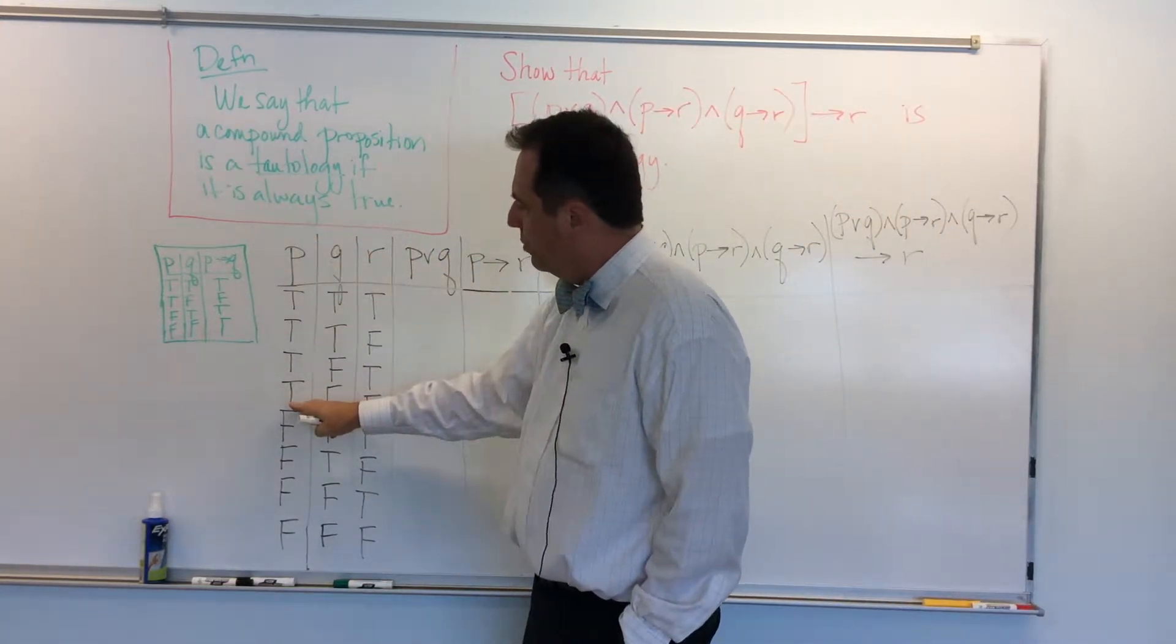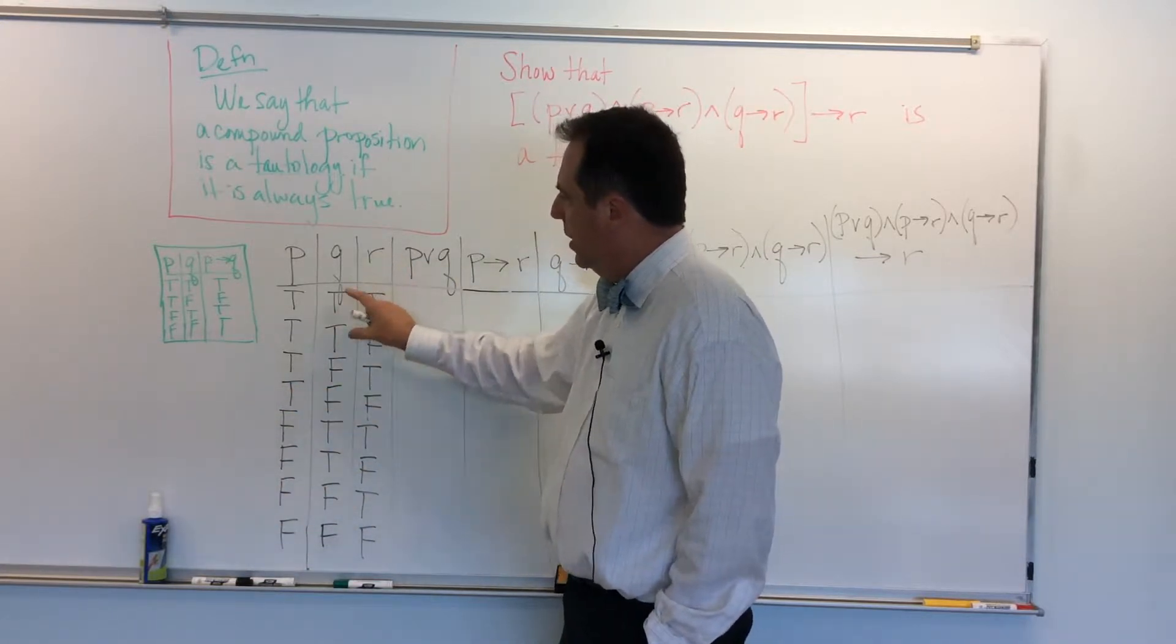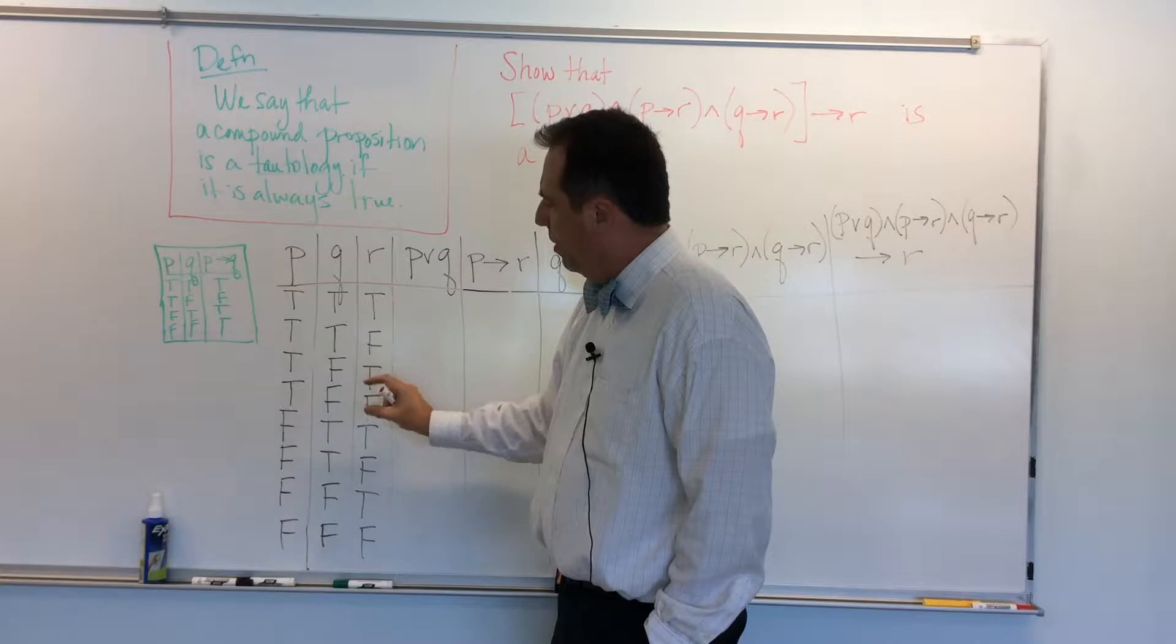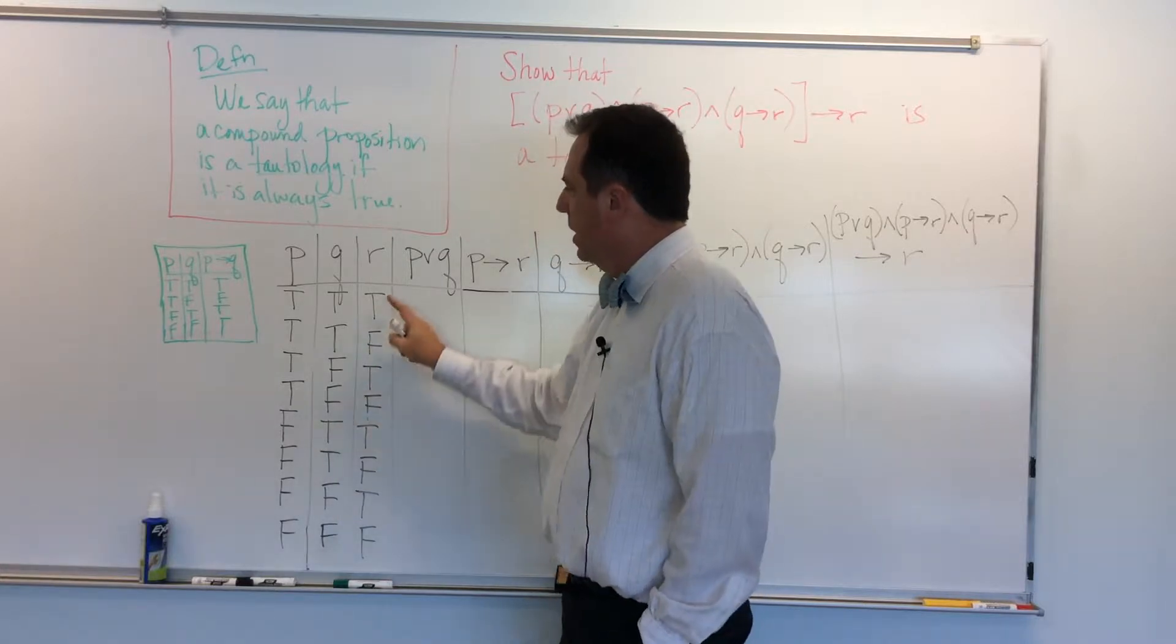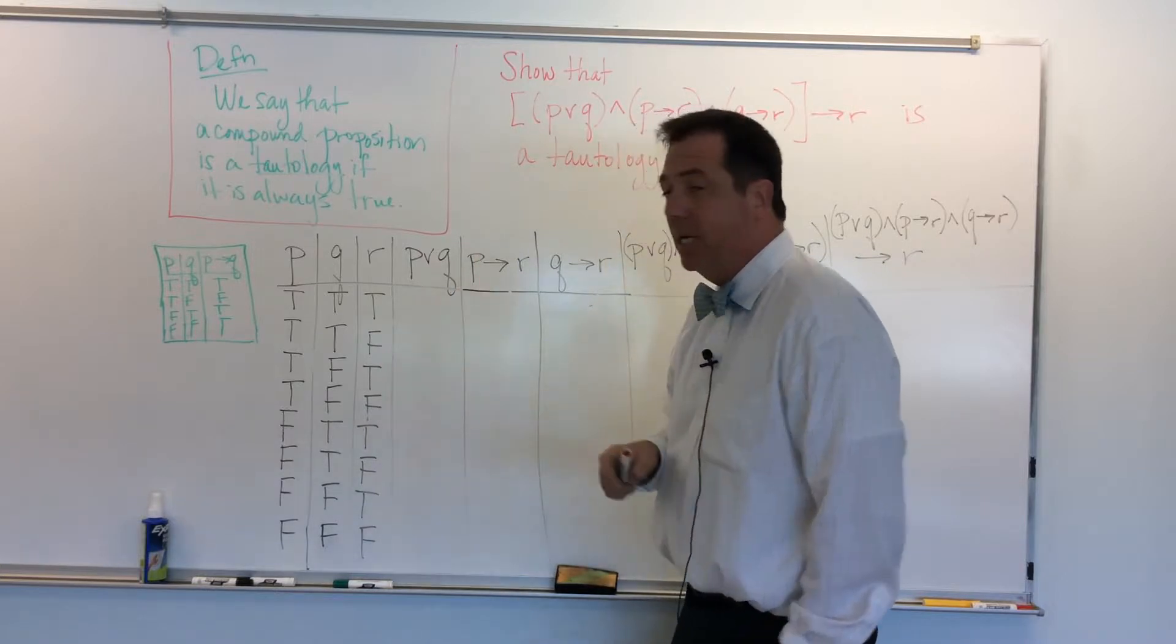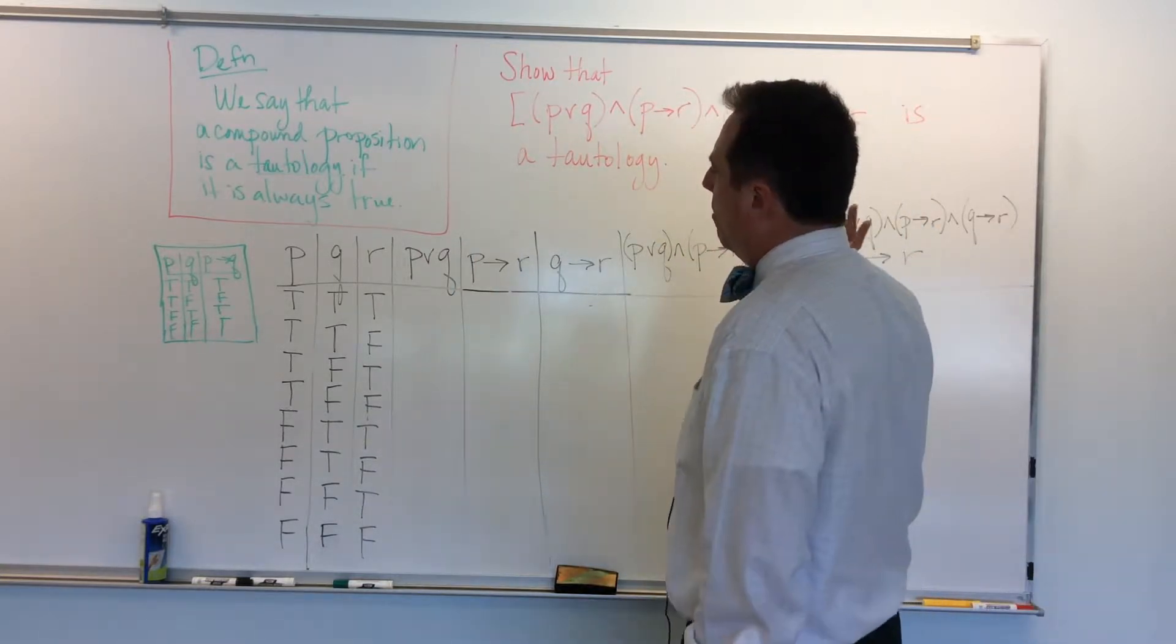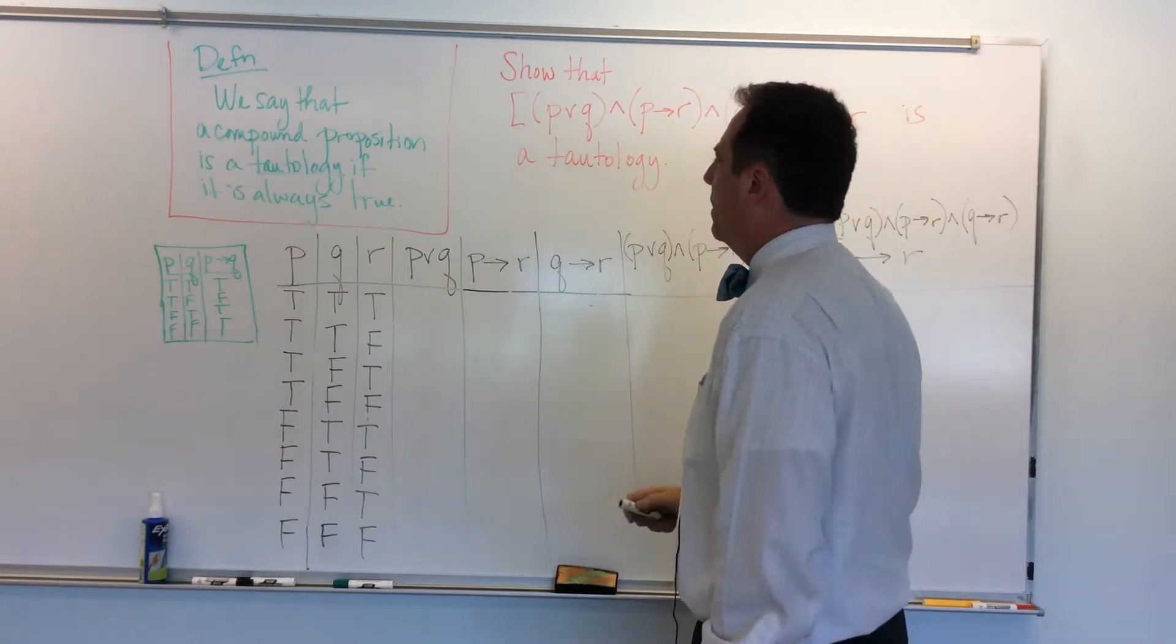So the first time I do half true, half false. I cut that in half again. In this case, it's two true, two false, two true, two false, and then cut that in half again, so it's just true, false, true, false all the way down. So I know I have every combination, or permutation rather, of true and false for P, Q, and R.